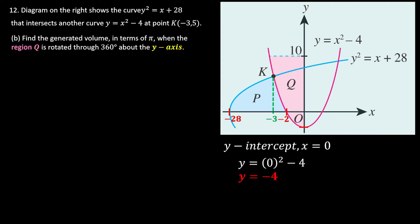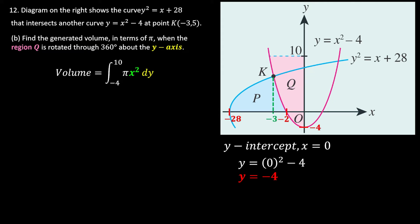Substituting x = 0 gives y = -4. The integration becomes π∫x² dy, because the radius of each circular cross-section spans left and right, making the radius the x value.